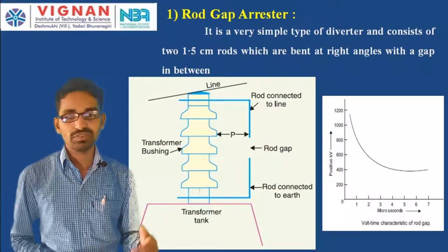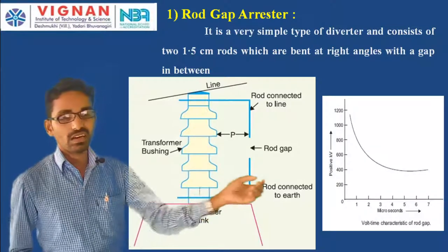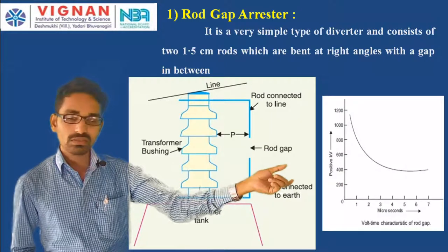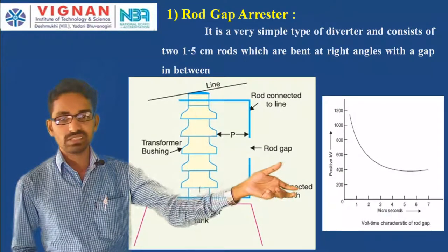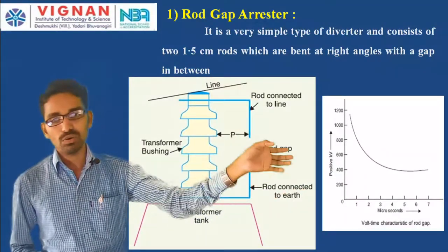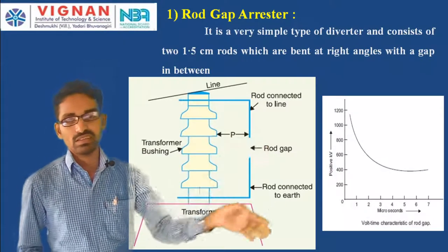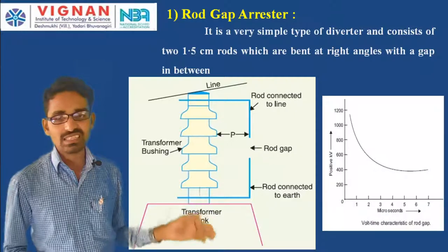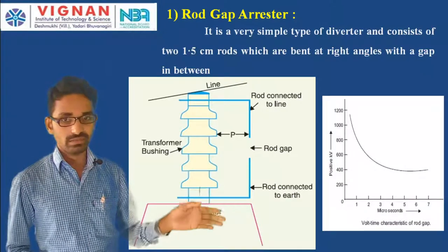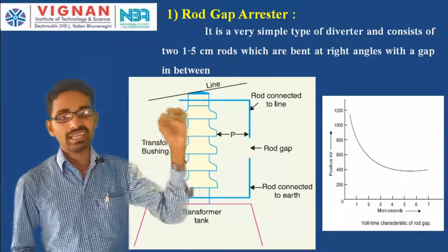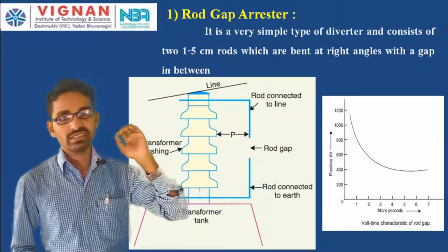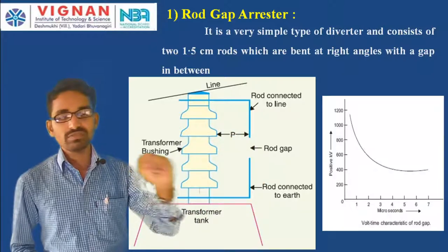What are the limitations of this rod gap arrestor? Looking at the volt-time characteristics of the rod gap arrestor — with time in microseconds on the x-axis and voltage on the y-axis — as time increases the voltage decreases. At the start the voltage is very high, and as time goes on the characteristics show the voltage value decreasing.